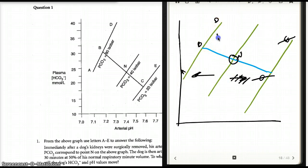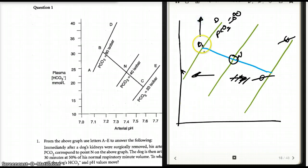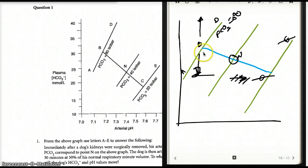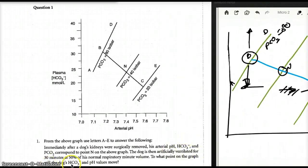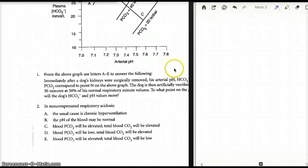Now we have to deal with A, B, and D. We know we are going to have PCO2 about 80. D has a higher bicarb than B, and A has a lower bicarb than B. But this is an instantaneous process. Bicarb changes to compensate are a delayed process, so we don't have any time for that in 30 minutes. So the answer is going to be B — the dog's bicarb and pH values will move to point B.